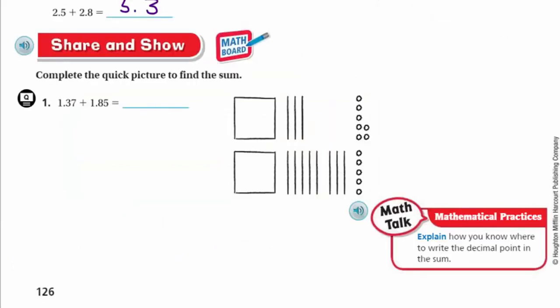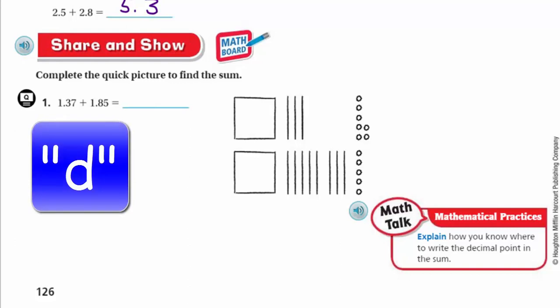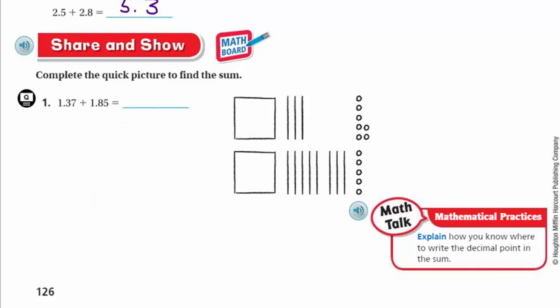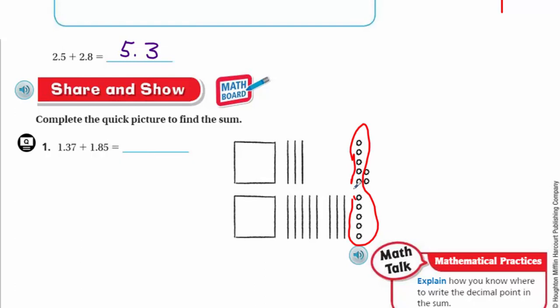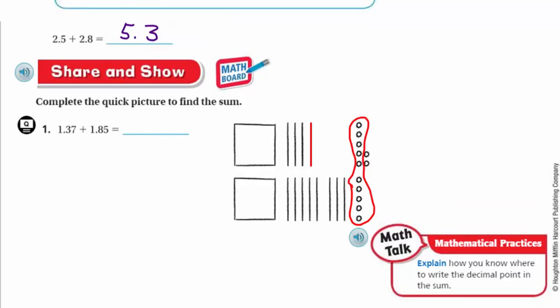Now it's time for share and show. It says complete the quick picture to find the sum. This is a good time for you to put the video on pause and see how you did. First thing I'm going to do is add the hundredths places. I see 7 and I see a 5. Well, 7 plus 5 is 12, and that is more than 9, means I need to regroup. I'm going to circle these. I see the 10 right here, so I'm going to put a big circle around this.